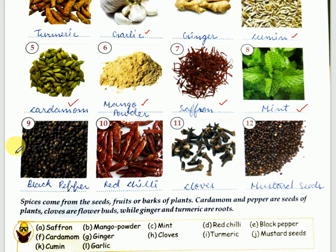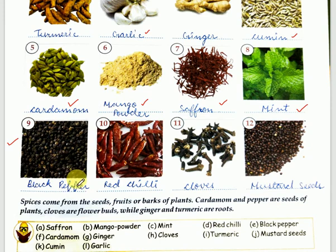Then ninth — you can see these black small balls. These are called black pepper, and in Hindi we call it kali mirch. Then tenth — this is the picture of red chili, and in Hindi we call it laal mirch.